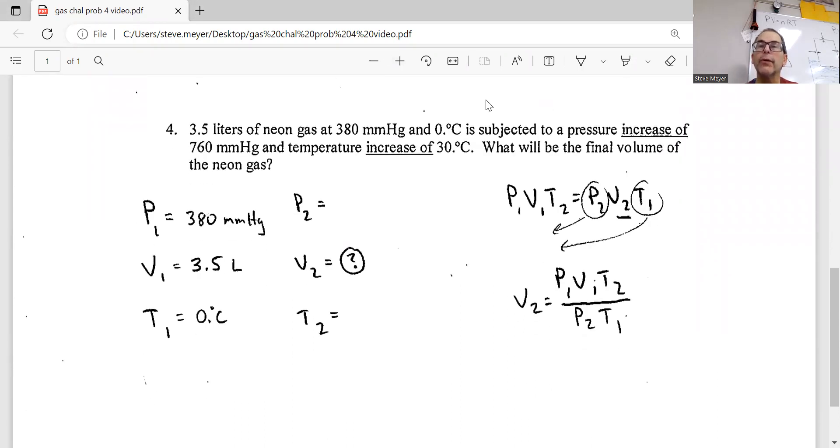We have 3.5 liters of neon gas at 380 millimeters mercury and zero degrees Celsius. It's subjected to a pressure increase of 760 millimeters mercury and a temperature increase of 30 degrees Celsius. What will be the final volume?